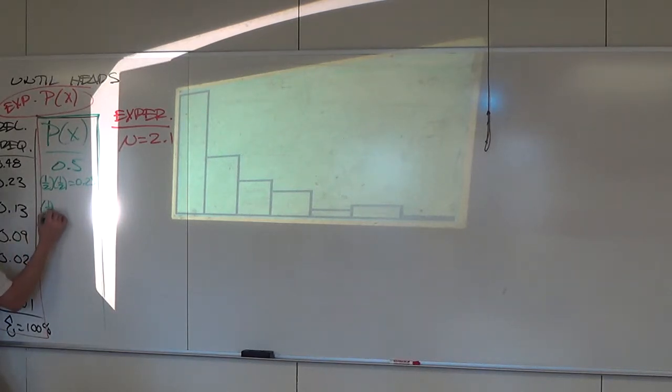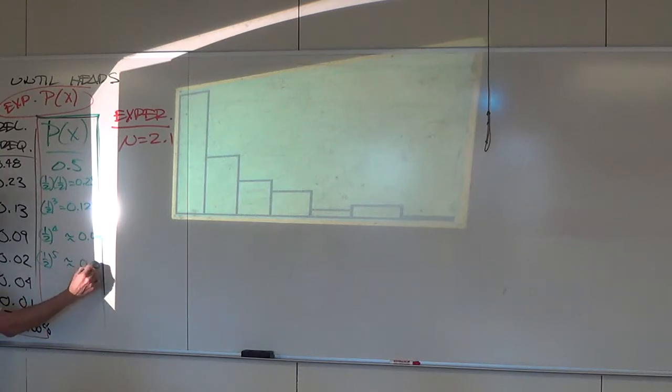This is going to be one half cubed which is 0.125 which is close to 13%. Now this is where it starts getting weird because these are the fluky, if you will, the fluky results. And in a small sample, even of a couple hundred, it's not enough to see the flukyness. So this should be one half to the fourth which is about 6% I think.